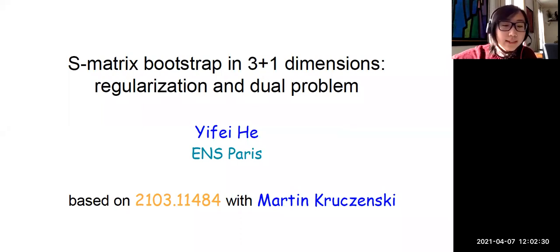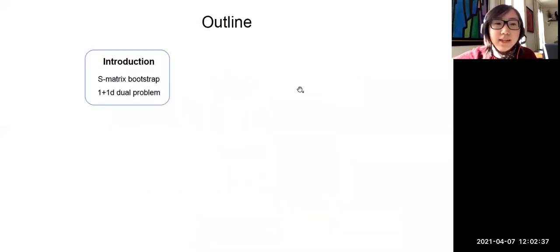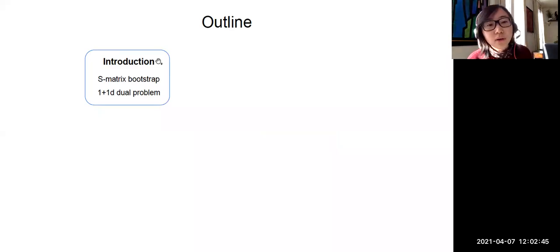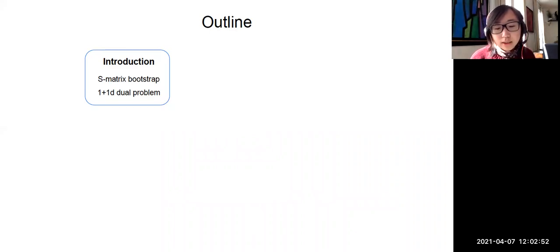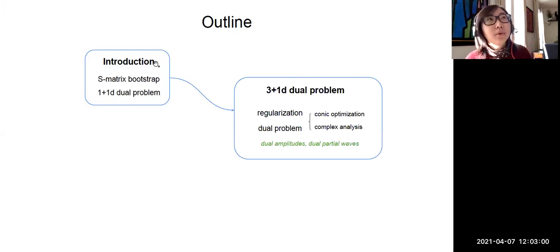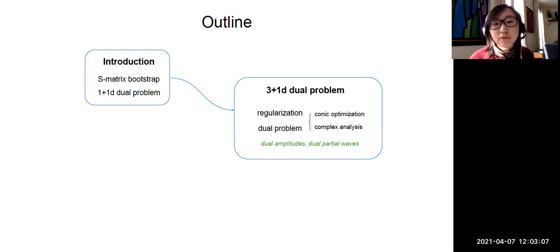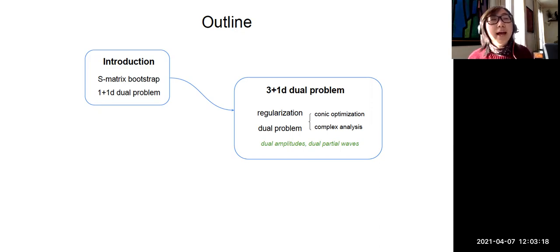This is based on a very recent paper together with Martin Kruchensky. The plan of the talk is the following: I'll start with a brief introduction recalling the basic framework of the S-matrix bootstrap. Since the main topic is the dual problem, I'll recall some key ideas in formulating the dual problem in one plus one dimensions. Then the main part will be constructing the dual problem in three plus one dimensions — first arguing the need for regularization, then formulating the dual problem in two different ways: using the language of conic optimization, and then revisiting it using complex analysis.